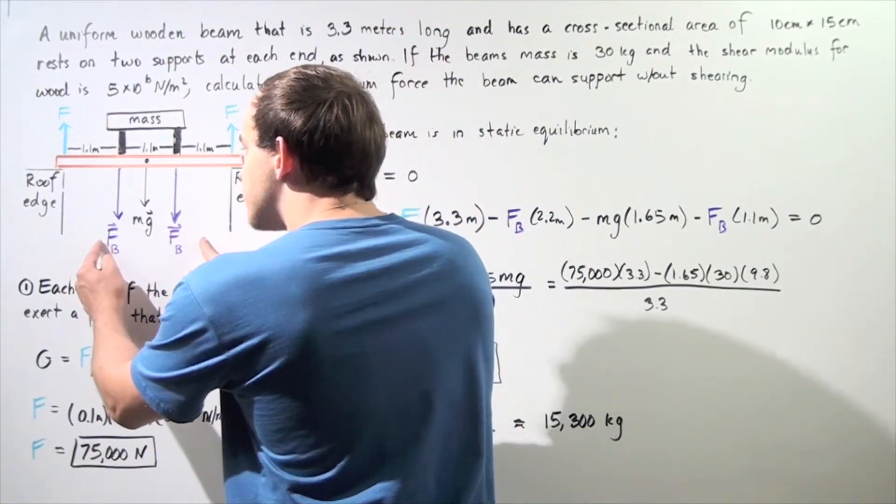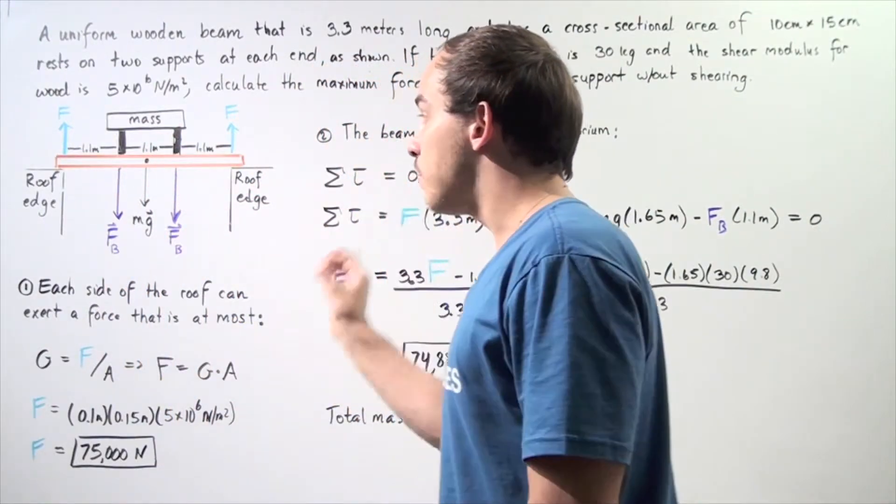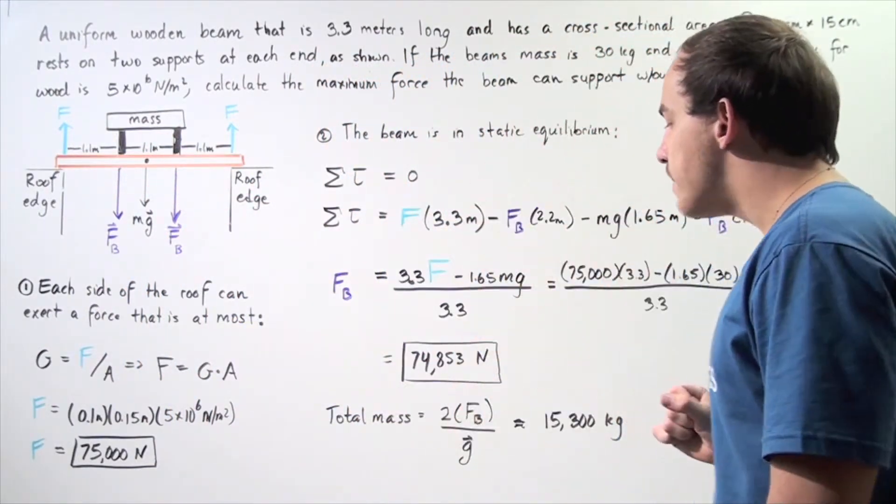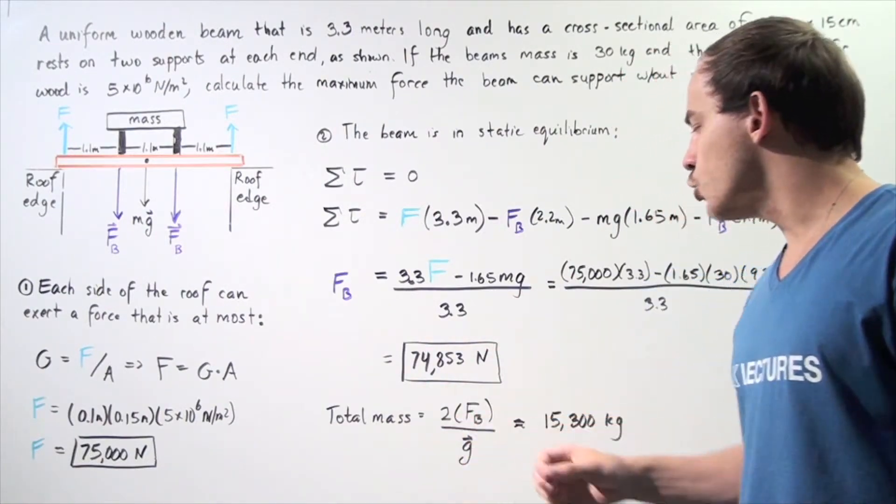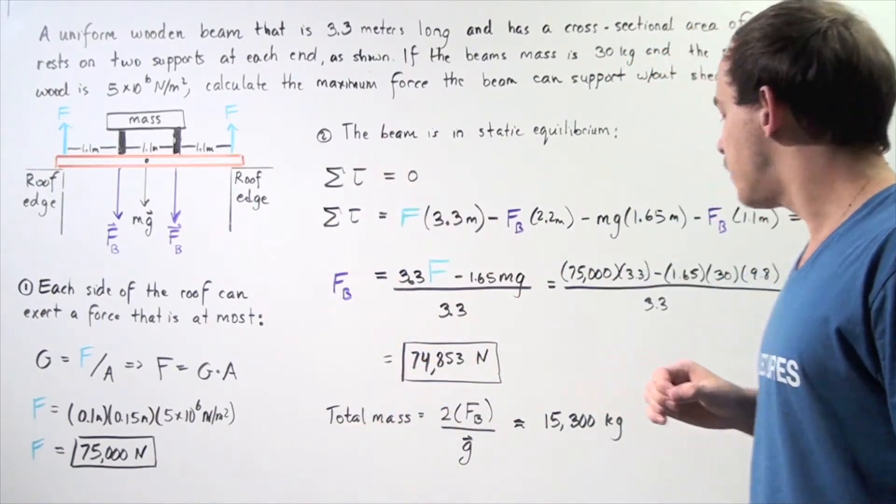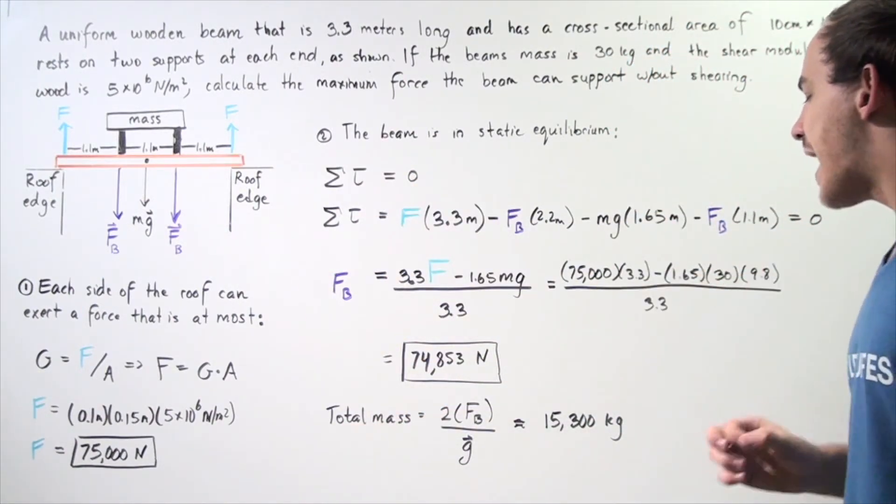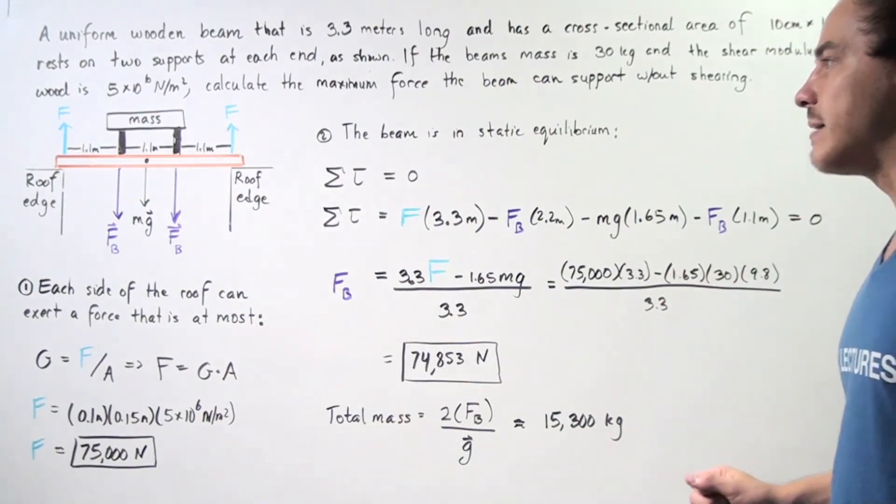and we get 74,853 is the maximum quantity of this purple force that our object can hold. And, because we have two forces, two such forces that our beam can support, that means to find the mass, we take this quantity, multiply it by 2, and divide that by G, and we find the total mass our beam can support is approximately 15,300 kilograms.